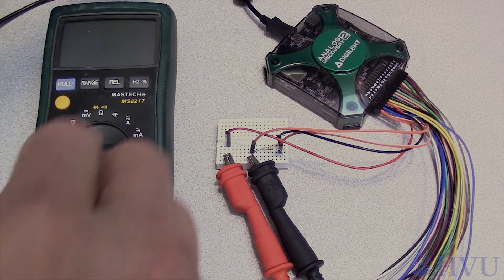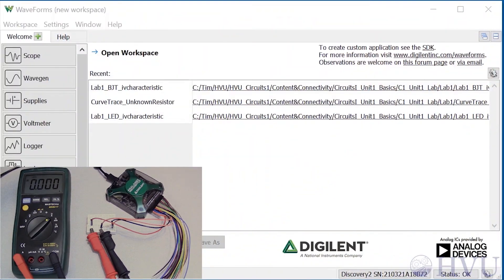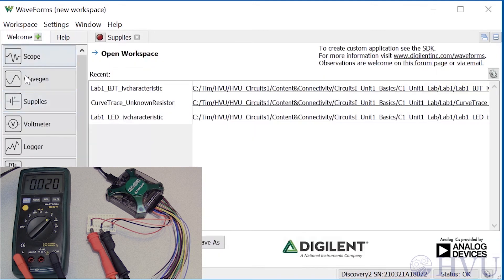Now let's set up the Analog Discovery to apply power to the circuit and measure the resistor's voltage. The Discovery's variable power supplies are controlled by clicking on the Supplies button under the Welcome tab. I'm using the positive supply, so I can disable V minus. The voltage level I'm going to use for V plus is 2 volts, and I click on the master enable button to turn on power.